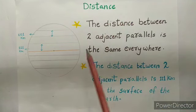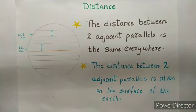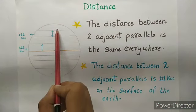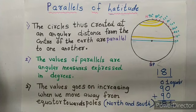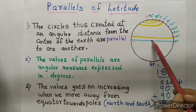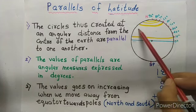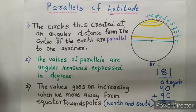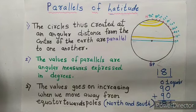Distance of latitude: the distance between two adjacent parallels is the same everywhere — that is 111 km. If we ask how many latitudes can be drawn on the globe, the answer is 181 latitudes in total. The equator is at 0 degrees, which is 1 latitude. From the equator to the north pole there are 90 latitudes drawn at an angular distance of 1 degree, and the same applies in the southern hemisphere — another 90 latitudes. The total is therefore 181 latitudes.